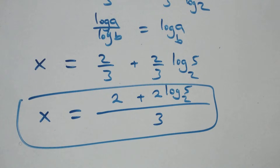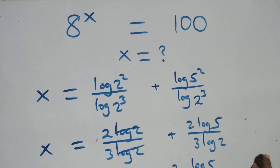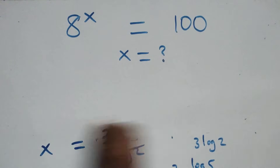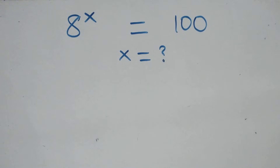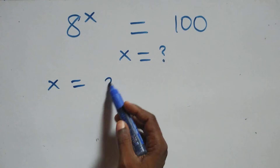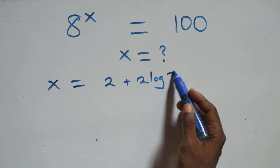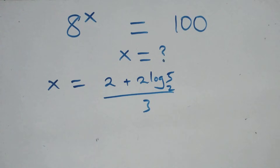So we have the value of x as 2 plus 2 log 5 base 2 all over 3. Let's check here if this satisfies the given equation. We substitute the value of x, which is x equals to 2 plus 2 log 5 base 2 all over 3.